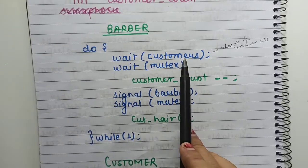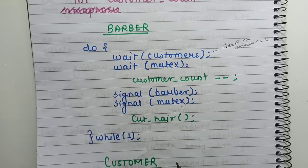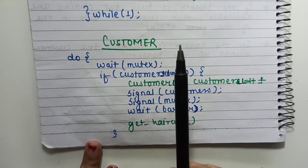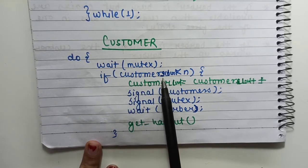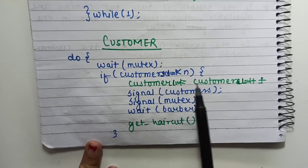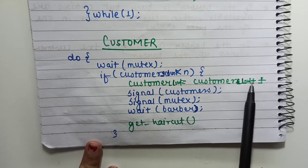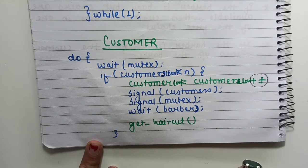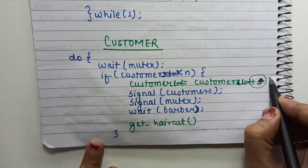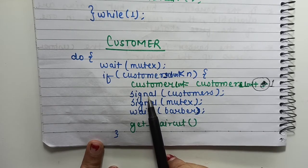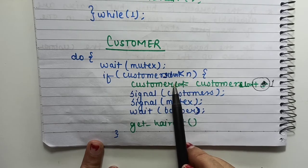For the customer process: when a customer arrives, it first executes wait on mutex — mutex is initially 1 so it gets it. Then it checks if customer count is less than N, the number of seats in the waiting room. If it is less than N, it increments the customer count by 1. After incrementing, it signals the customer semaphore and then waits on the barber semaphore — meaning it is waiting for the barber to call it.